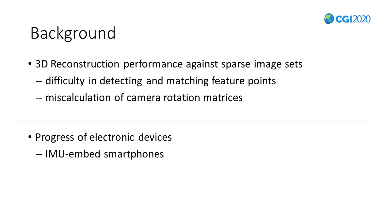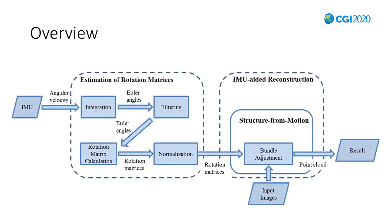With the progress of electronic devices, most smartphones now equip an embedded IMU, from which we are able to calculate the rotation matrix of the smartphone. So here, we put forward an IMU-aided reconstruction system. The structure is shown on the side. There are two essential parts: IMU data processing, that is estimation of rotation matrices, and IMU data filtering, that is IMU-aided reconstruction.